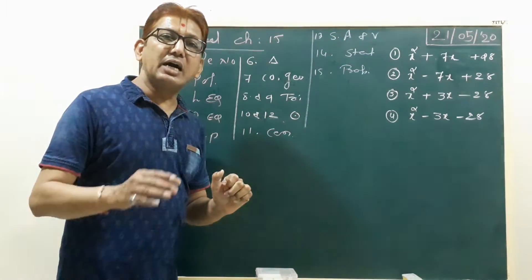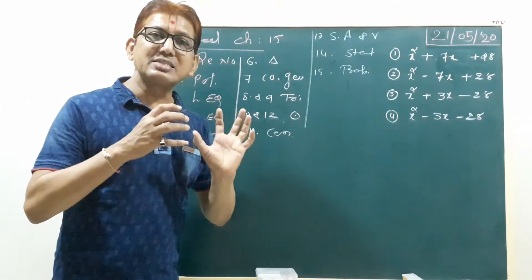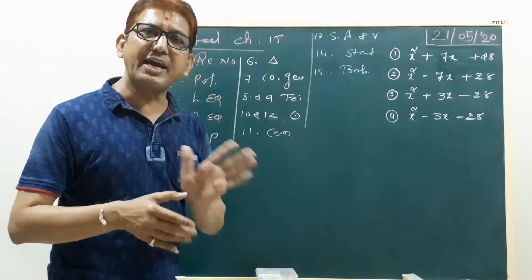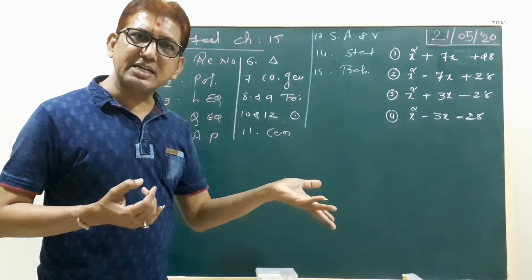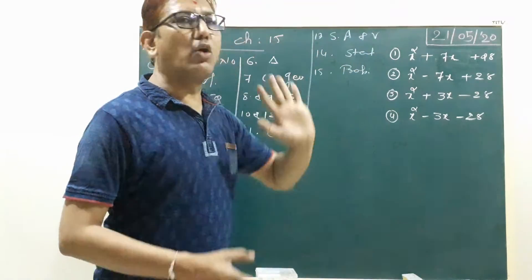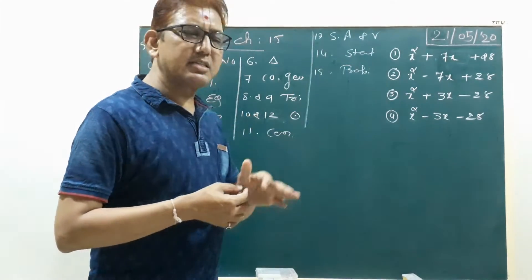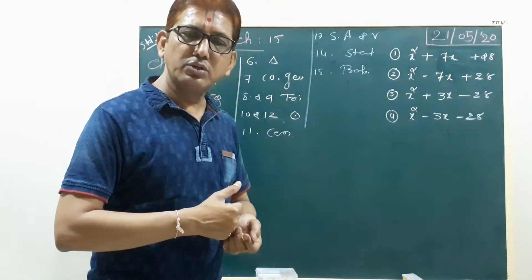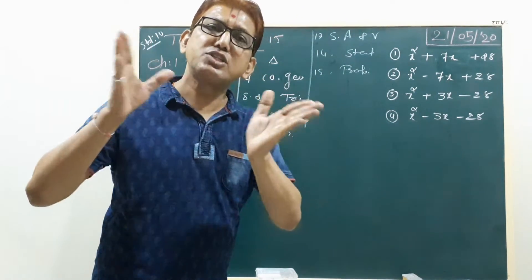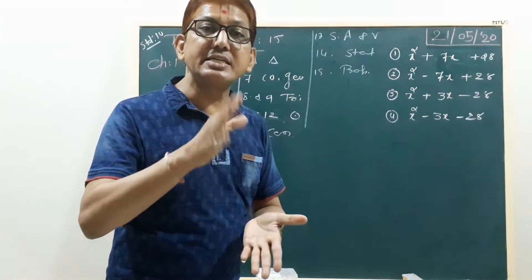Chapters 10 and 12 are Circle and Areas Related to Circle — these two chapters are also basic for 11th and 12th. Chapter 11 is Construction, where we draw figures. Chapter 13 is Surface Area and Volume, also studied in 9th standard. Chapter 14 is Statistics — in this chapter we discuss mean, median, and mode with their formulas. Chapter 15 is Probability, also studied in 9th standard.